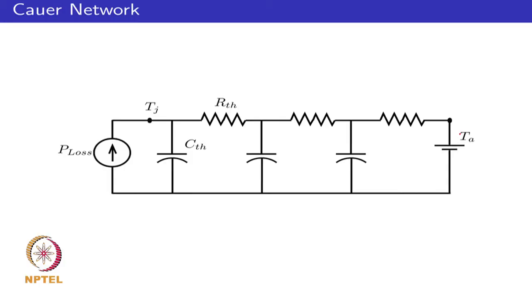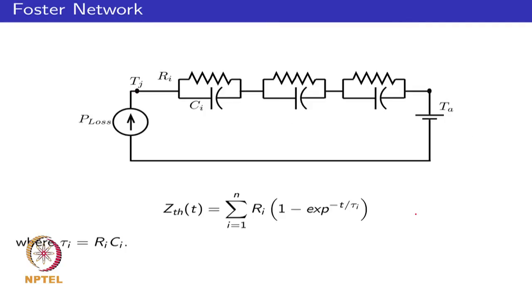Often in a power module, data sheets provide transient thermal impedance characteristics for a fixed case temperature, and you are looking at the transfer function between junction temperature and case temperature. The same behavior can be obtained from an equivalent Foster network. The intermediate nodes of the Foster network may not make much physical sense, but from a terminal point of view, the behavior of the Foster network is similar to that of the Cauer network.